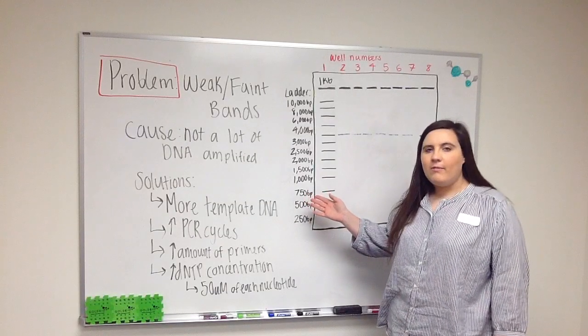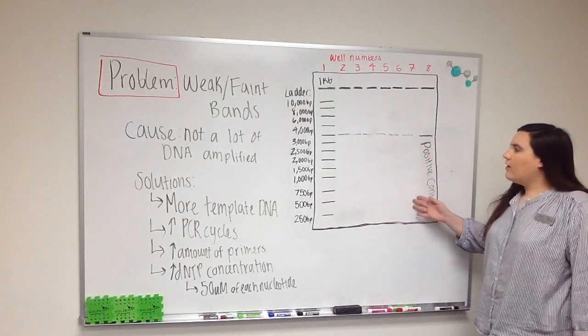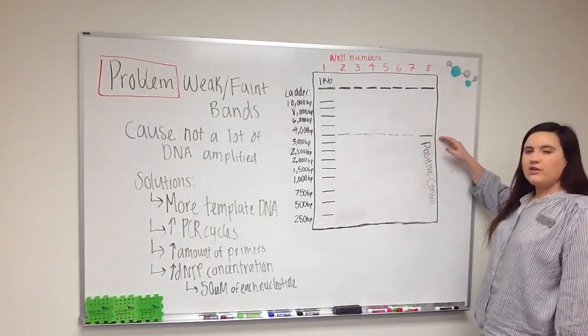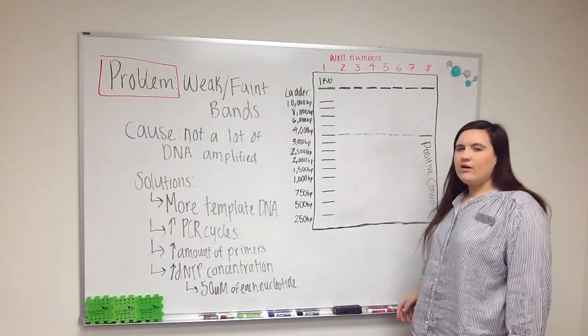The next common PCR problem we're going to be discussing is weak or faint bands. How this will look on a gel is that you'll have some amplification of the desired product but the bands might be weak or faint and it's hard to see them on the gel.